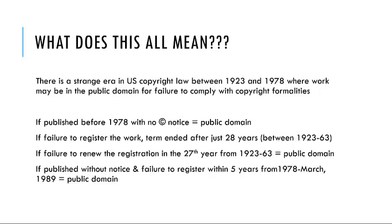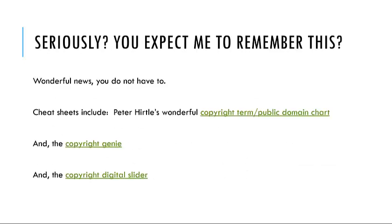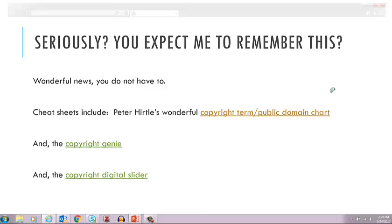Or, if you published the work without notice and you failed to register the work within five years from 1978 to March of 1989, the work would be in the public domain. Do you expect me to remember all of this? Here's the wonderful news — you don't have to. There are some wonderful cheat sheets out there. One is Peter Hertel's Copyright Term Public Domain Chart. Let's take a look at it.